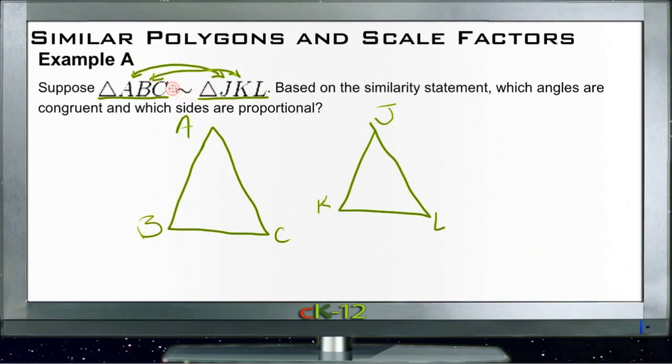So we know that if we mark this one with one, we can mark the other one with one. We can mark this one with two and this one with two, and we could mark this one with three and this one with three.